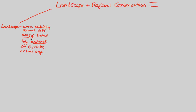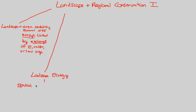When we understand landscape in the context of ecology, we call it landscape ecology. Landscape ecology refers to the spatial arrangement of habitat types. This is very much a physical, spatial concept — we are studying something in space.